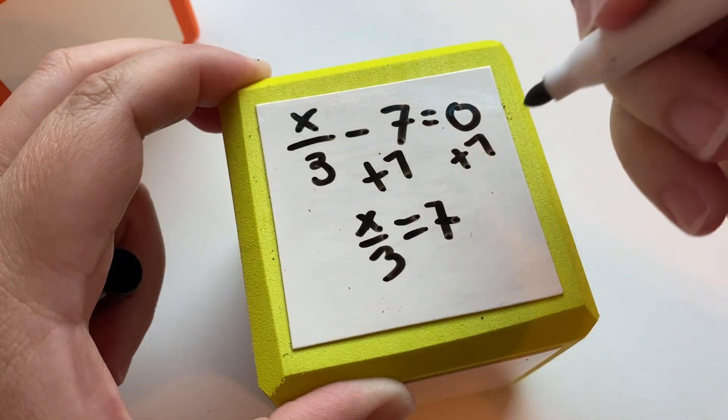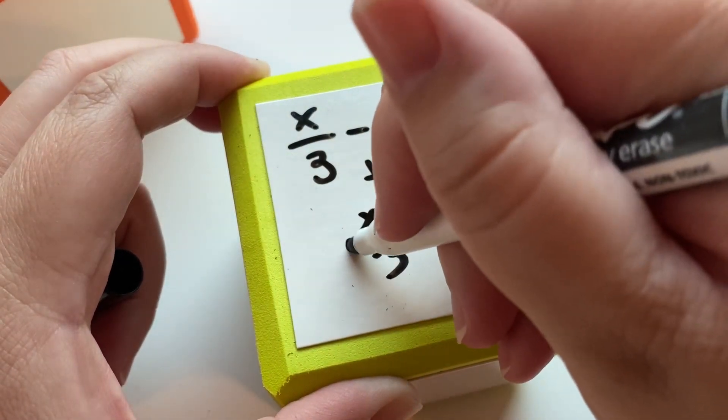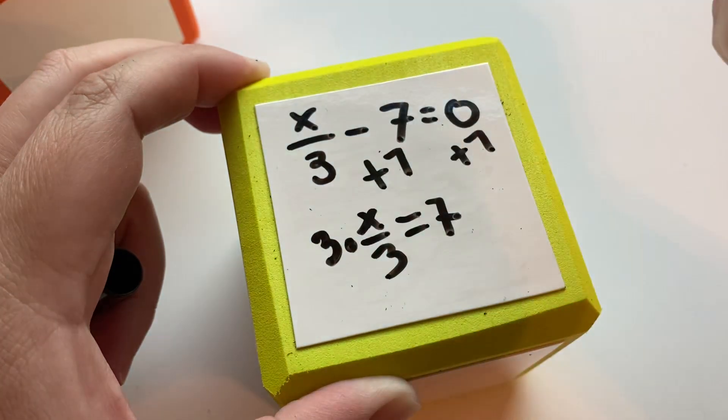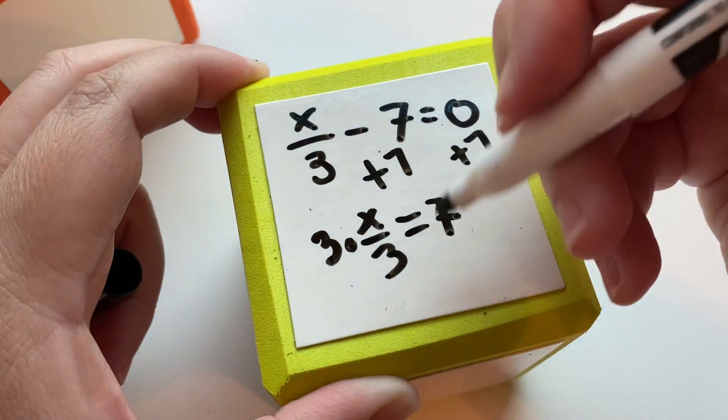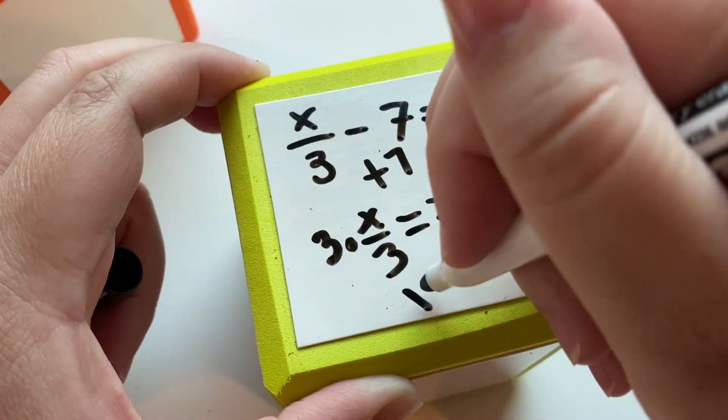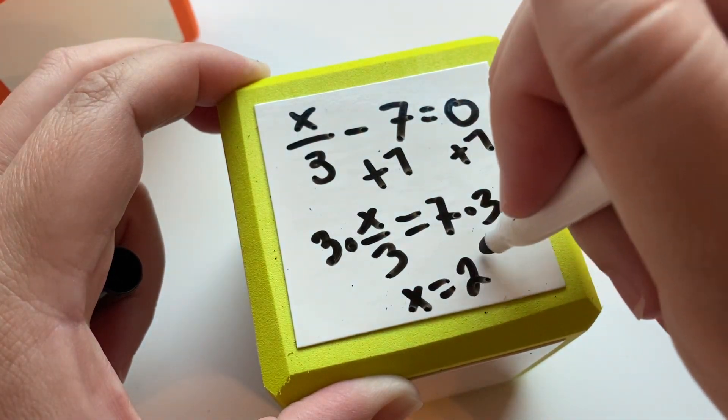That little line there on the 7. And then we're going to times both sides by 3 because this was divided by 3. And then we get x is equal to 21.